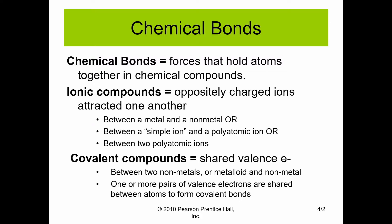The first is called an ionic bond, and this occurs in ionic compounds. In an ionic bond, we have two charged ions of opposite charges attracted to each other. This type of bond can occur between a large number of different compounds, such as between a metal and a nonmetal, a simple ion and a polyatomic ion, or two polyatomic ions.